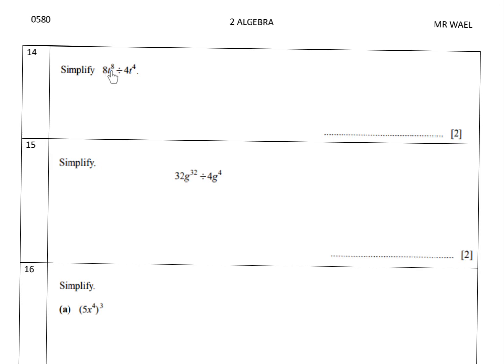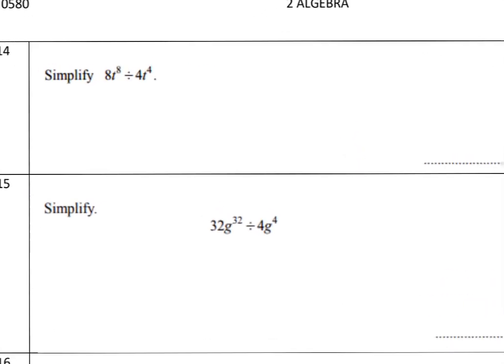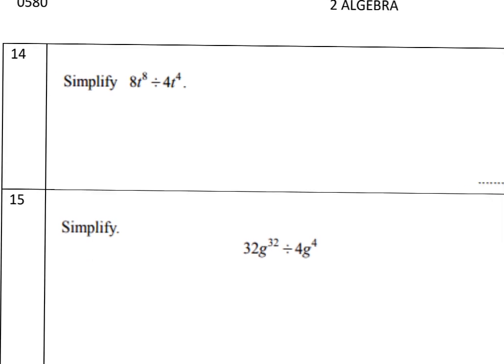Problem 14b: simplify 8t^8 divided by 4t^4. 8 divided by 4 equals 2. t^8 divided by t^4: subtract the powers, 8 minus 4 equals 4, giving t^4. So the answer is 2t^4.